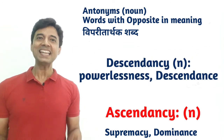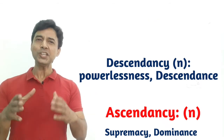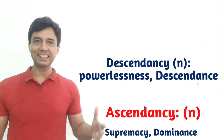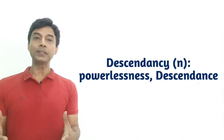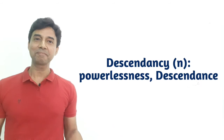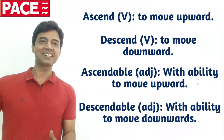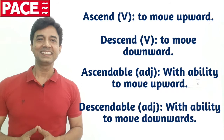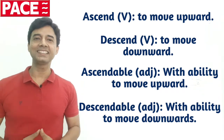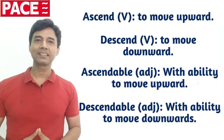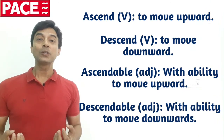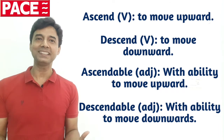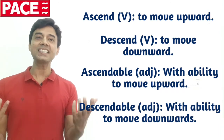From the same root word, many different words are formed in English — that's very easy. Descendancy means the process of movement downwards. Now the verb forms: 'ascend' means to move upward, and 'descend' means to move downward. 'Ascendable' means having the capacity to move upward — for example, 'His career is ascendable.'